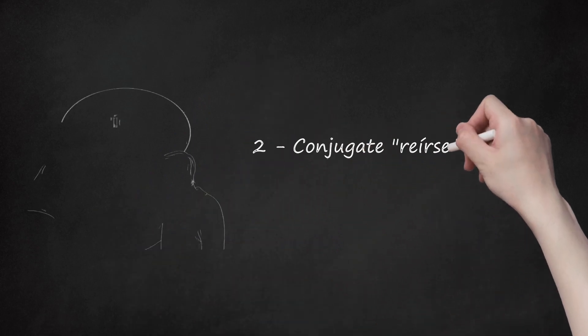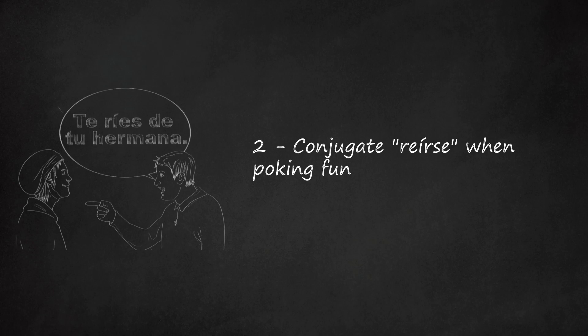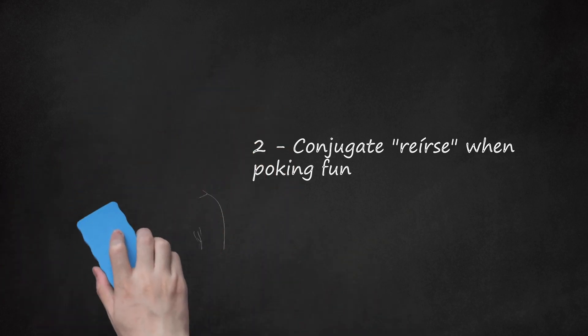2. Conjugate 'reírse' when poking fun. You could use this verb to describe making fun, but it's more appropriately translated as poking fun at or laughing at. Pronunciation: re-ír-se de. Use the preposition 'de' before the person being made fun of, and add an appropriate pronoun to keep this verb reflexive. Note that 'reír' is an irregular verb. Conjugations: first person singular — río; second person singular — ríes; third person singular — ríe; first person plural — reímos; second person plural — reís; third person plural — ríen. Example: 'Te ríes de tu hermana' — You poke fun at your sister.